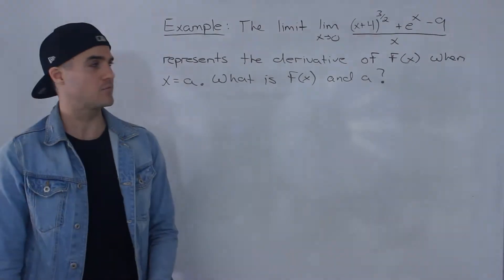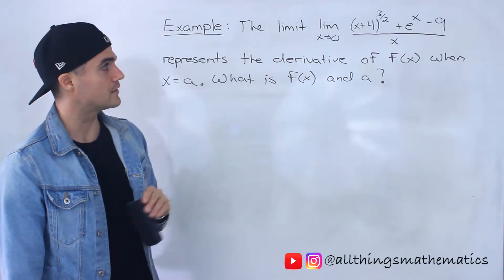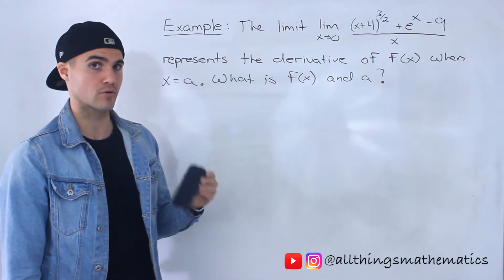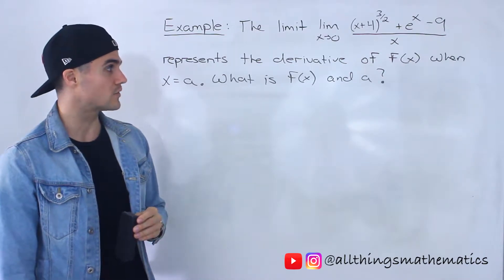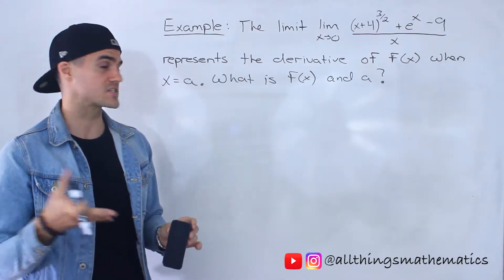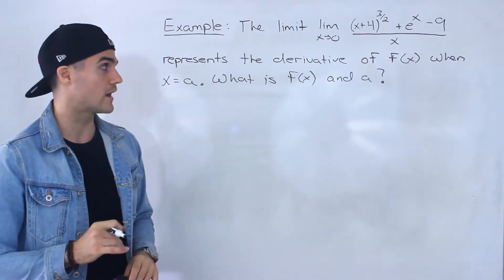Welcome back everyone. Patrick here, moving on to the next example. We're told that this limit, the limit as x approaches 0 of (x+4)^(3/2) + e^x - 9 all over x, represents the derivative of f(x) when x equals a. We need to figure out what's the function f(x) and what's the a value.